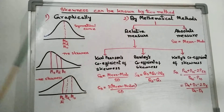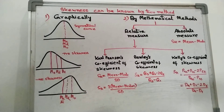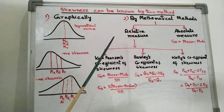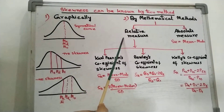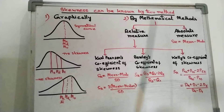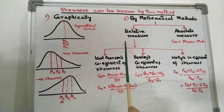If the two series are of different units, then also we can compare the skewness of the two series, because relative measures are unit free.